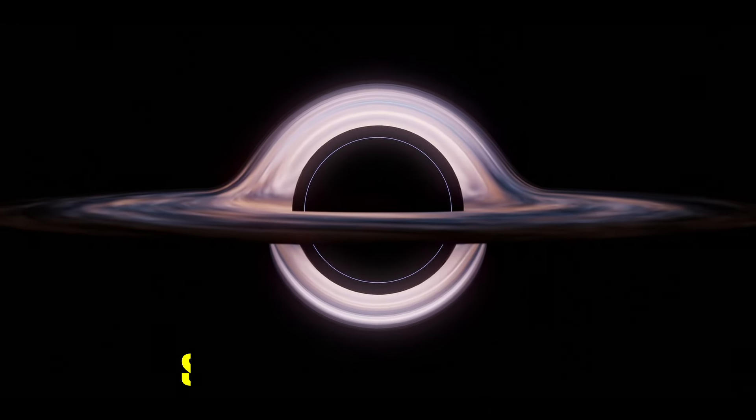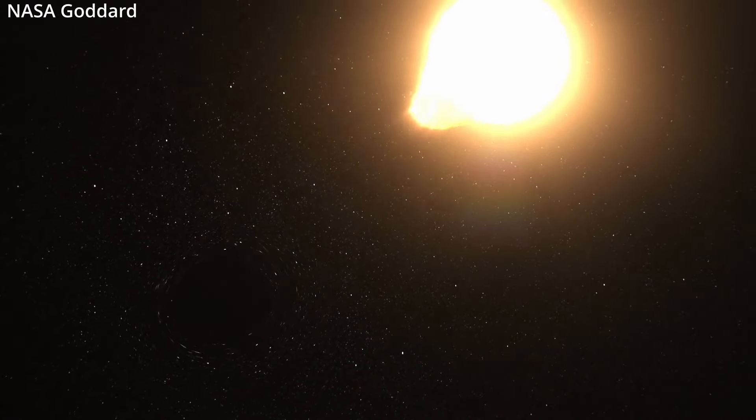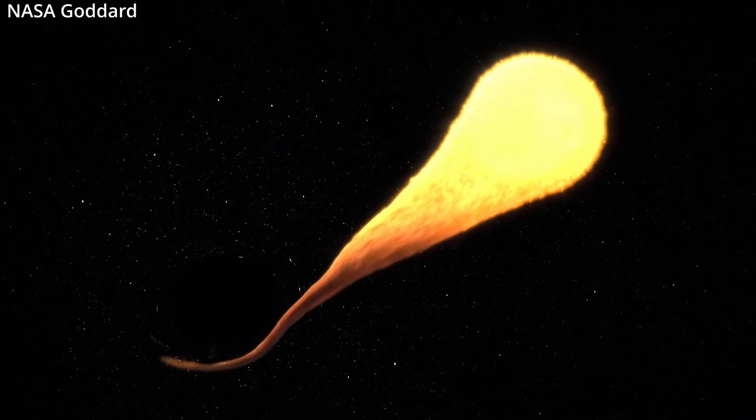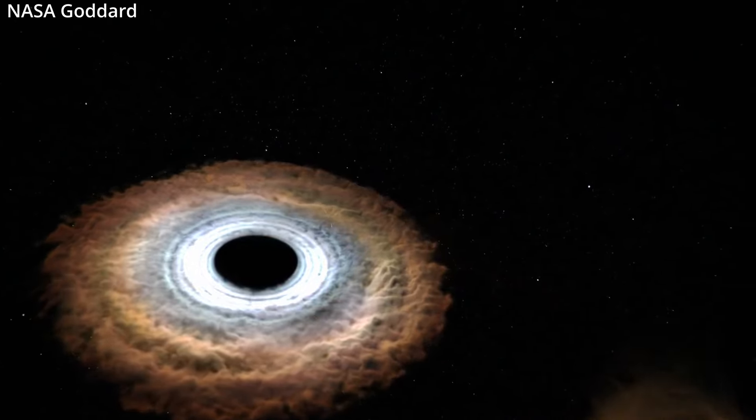Non-rotating black holes are known as Schwarzschild black holes. Black holes can eat stars that come too close in a process known as tidal disruption. This is when a black hole brutally tears the star apart before consuming it.